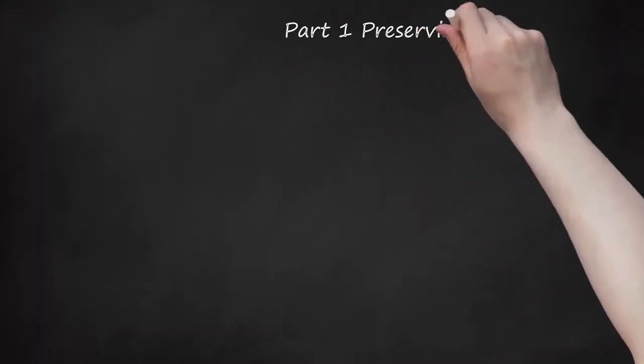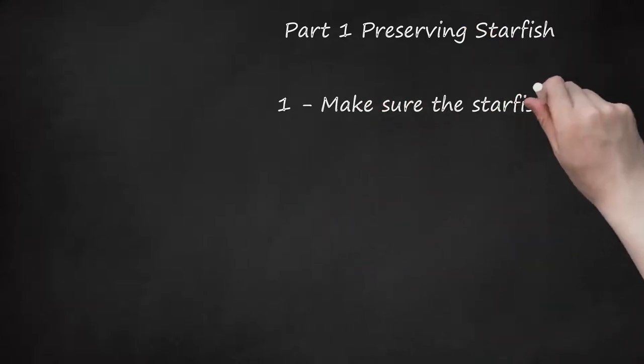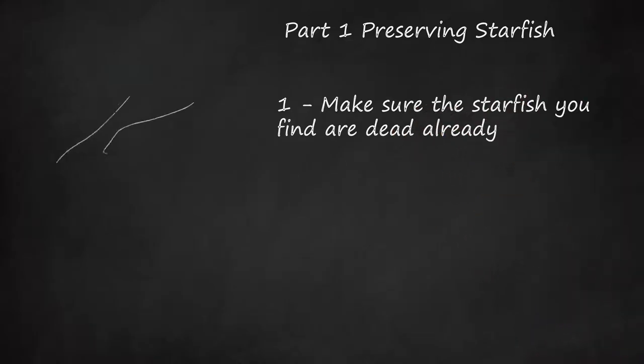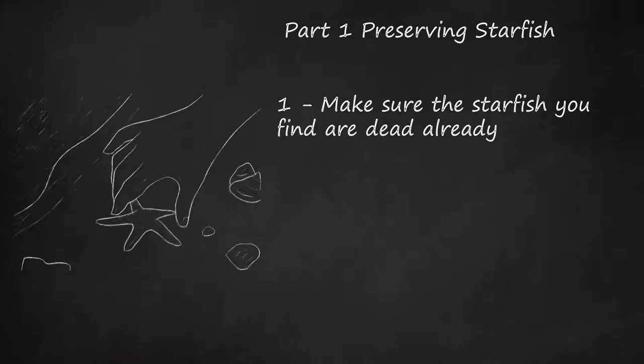Part 1. Preserving Starfish. Step 1: Make sure the starfish you find are dead already. Of the nearly 1,500 species of starfish in the world, they all have one thing in common: they're slow. It can be very difficult to tell if a starfish you find is living or dead, but you can look for a few key signs that you'll be paying tribute to the beautiful animal by preserving it, not killing it. If you come across a starfish on the beach, wait to touch it.